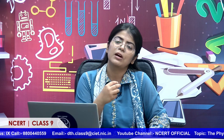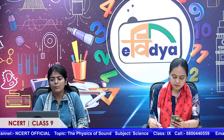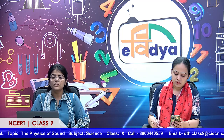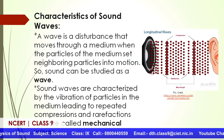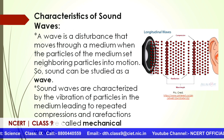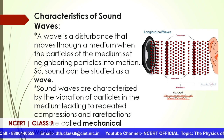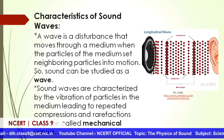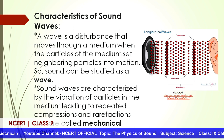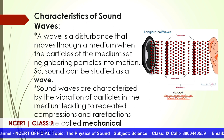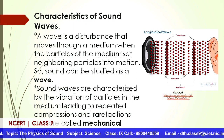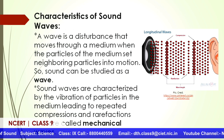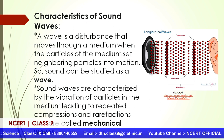When a disturbance travels in space and time, we attribute it to a wave. A wave is a disturbance which travels in space and time. This brings us to the characteristics of sound waves. A wave is a disturbance that moves through a medium when particles set neighboring particles into motion. So sound can be studied as a wave. Sound waves are characterized by the vibration of particles in the medium leading to repeated compressions and rarefactions, and hence they are called mechanical waves.